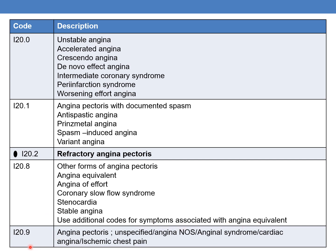Finally, I20.9 is angina pectoris unspecified, or angina NOS. Anginal syndrome, cardiac angina, and ischemic chest pain are all coded to I20.9. These are the various codes of angina pectoris.